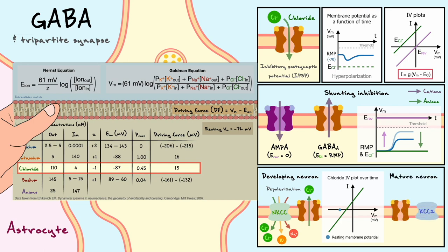In mature neurons, the NKCC cotransporter gets downregulated and a new transporter, KCC2, gets expressed. KCC2 exports 1 potassium and 1 chloride out of the cell, making the internal chloride concentration very small. As a result, the equilibrium potential for chloride becomes more negative, and the IV curve shifts below the resting membrane potential. Now when GABA receptors open, it causes a hyperpolarizing current due to chloride influx. This shows that inhibition and excitation arise from the reversal potential of the ions flowing through the channels, not necessarily from the structural properties of the channels themselves.